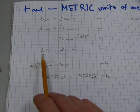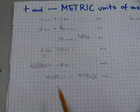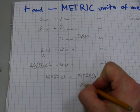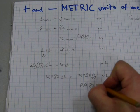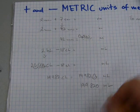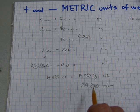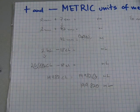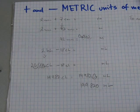So, the final answer is 2 hectoliters minus 18 centiliters is 199,820 milliliters. That's how to add and subtract metric units of measurement.